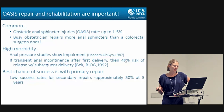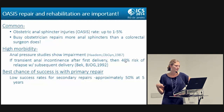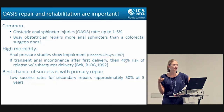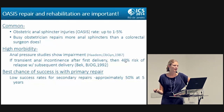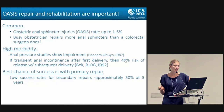OASIS repair and rehabilitation are really important. The recognized OASIS rate is up to 1–5% — not even accounting for the 10–30% potentially missed. A busy obstetrician may repair more anal sphincters than a colorectal surgeon. OASIS is associated with high morbidity, including impact on anal pressure studies. If someone has transient anal incontinence after their first delivery, they have a 40% risk of relapse with a subsequent delivery. Our best chance of success is with the primary repair, with much better success rates than a secondary repair; approximately 50% success rate at five years with secondary repair.